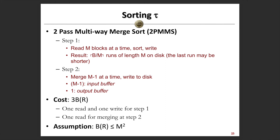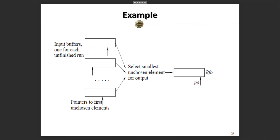We can show with a diagram how we do the merging for step two. Assume we have M-1 blocks read into the memory buffer. When merging to get the result, we normally need one pointer for each block, denoting the current element we are working on. For all M-1 blocks, we have one pointer each. We compare the numbers pointed to by the pointers and send out the smallest number, putting it into the output list. We fill the output buffer one by one until it is full, then write the numbers back to disk and continue merging the remaining elements.